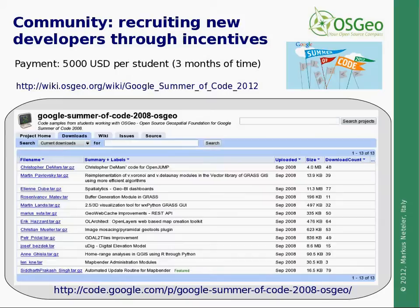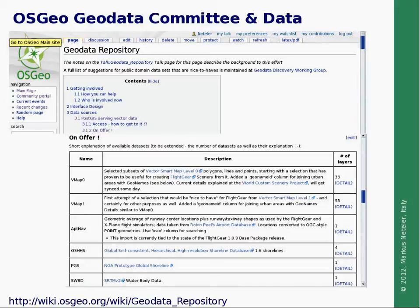Besides software, geodata are very important. There is the OSGEO geodata committee discussing public data availability. The idea is to foster and enforce also in Europe the release of public geodata, and this is now slowly taking pace. We can see that in these years more and more geodata repositories are open to the public. The geodata committee aims at generating a catalogue, hopefully in the near future also with a metadata harvester.